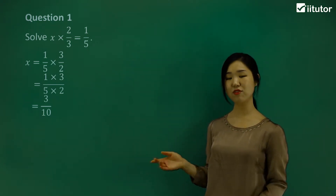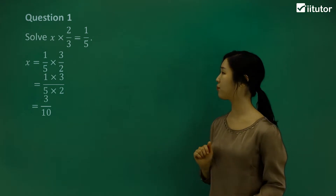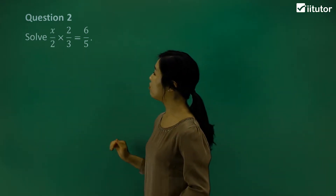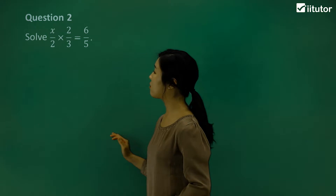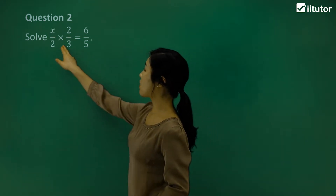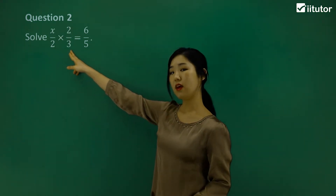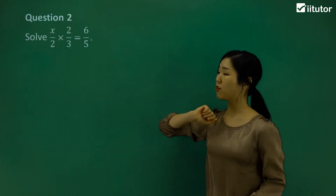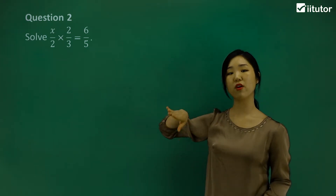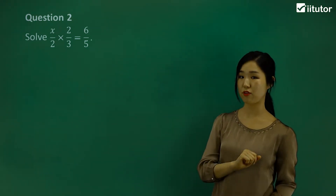Make sense? Just remember that one rule for division. Question 2 — again, we're solving for x. First of all, let's get rid of this 2 over 3. We're multiplying by 2 over 3, so in order to move it over to the other side, we'll have to divide by 2 over 3.